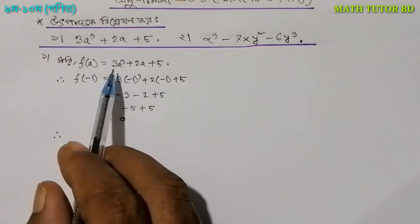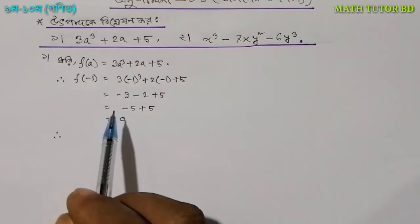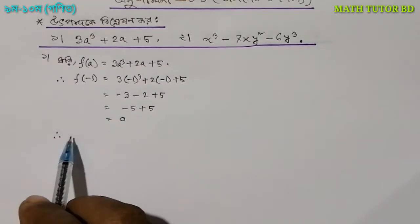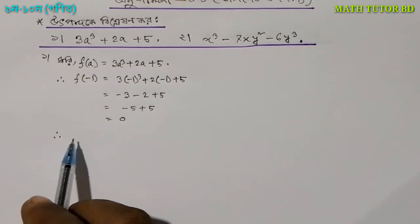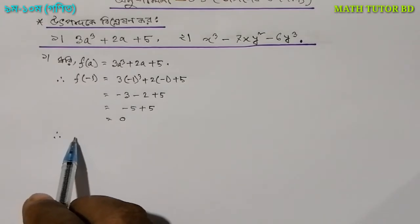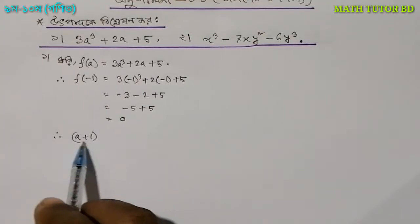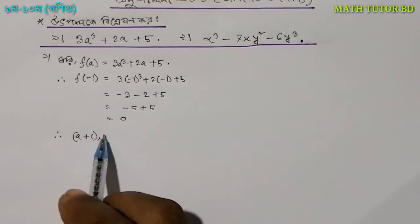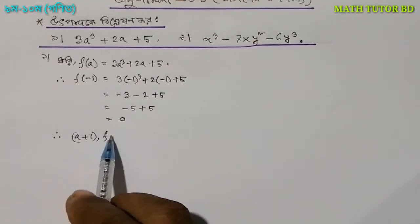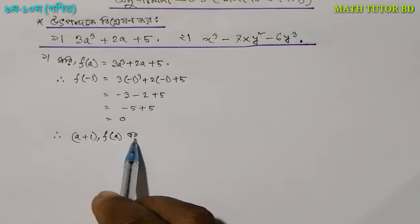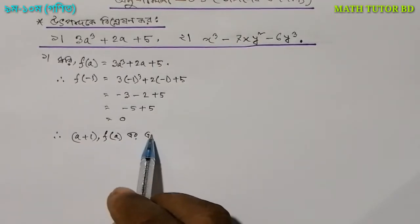We can see that a is 0, so (a plus 1) is a factor. Now let's take a look at the (a plus 1) function of a as an active product.